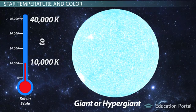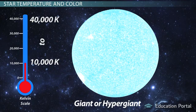These stars are giants and hypergiants, much, much bigger than the sun, and also much, much hotter, between 10,000 and 40,000 Kelvin.